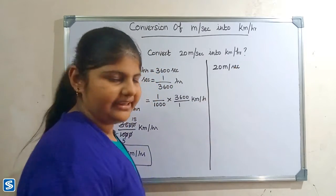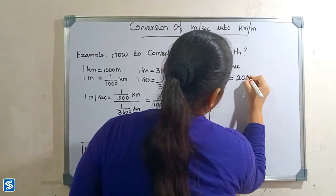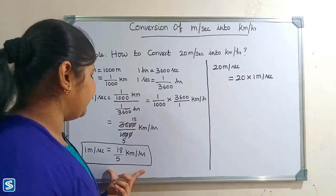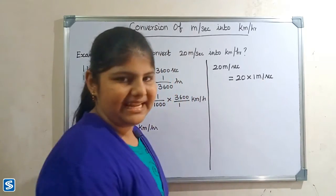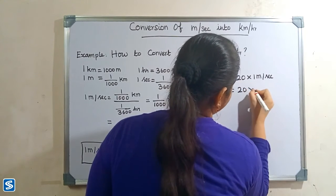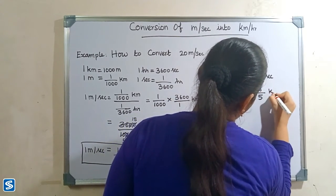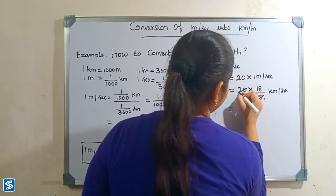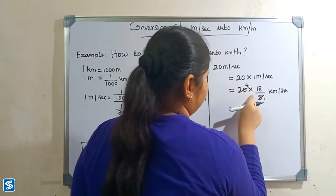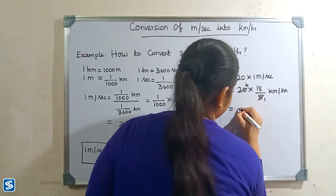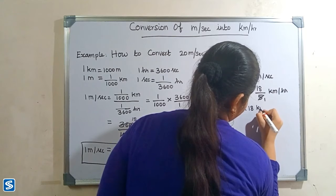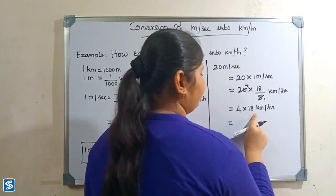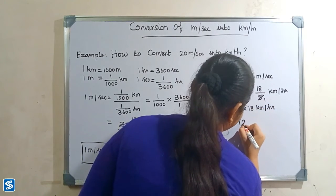So 20 meter per second can be written as 20 multiply 1 meter per second. Now we have to substitute 18 by 5 kilometer per hour in the place of 1 meter per second. So 20 multiply 18 by 5 kilometer per hour — 5 ones are 5, 5 fours are 20, so 4 multiply 18 kilometer per hour.